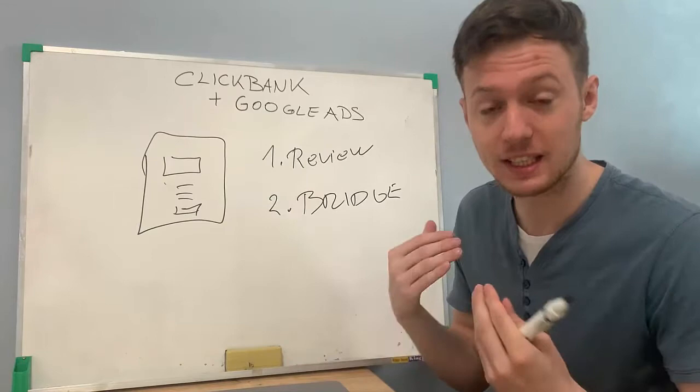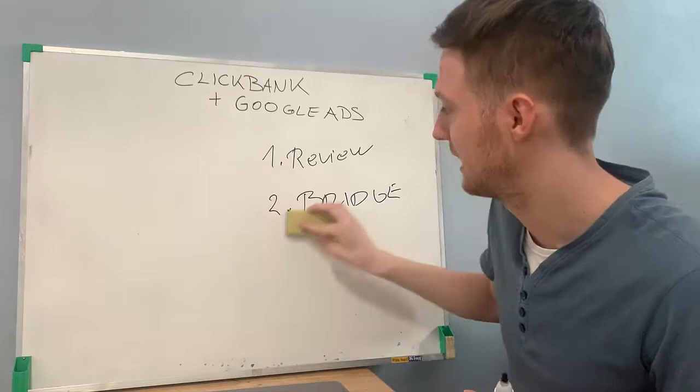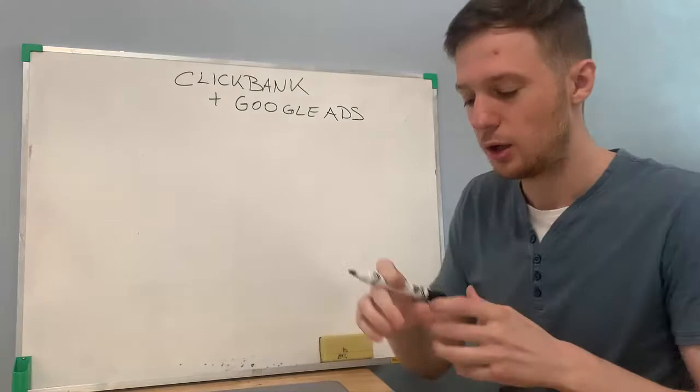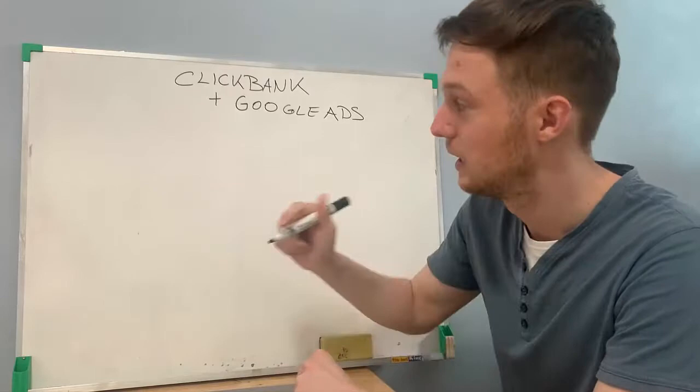These are two ways that most people are doing and this is why they don't see much results — it's not really working for them. But what I've been doing to really have massive success on Google Ads promoting Clickbank products is to build my own custom landing page and basically build my own email list.